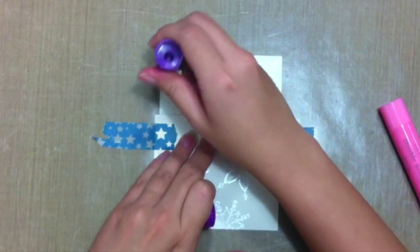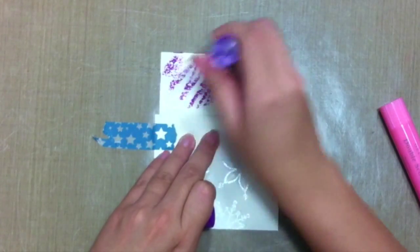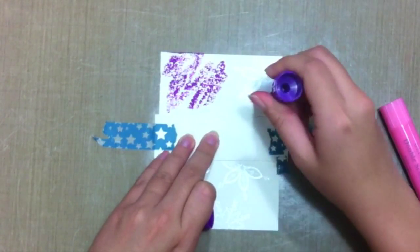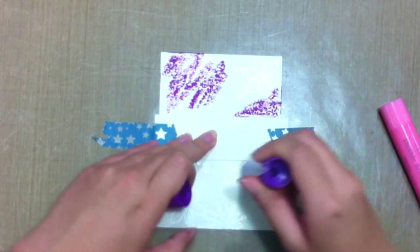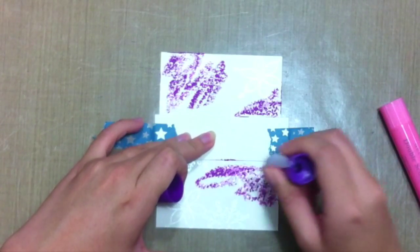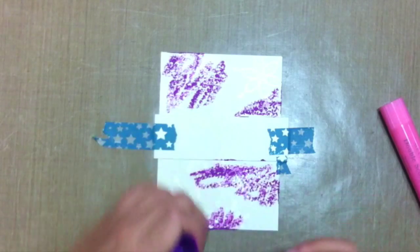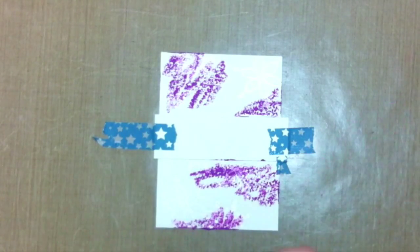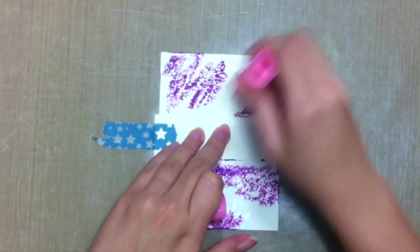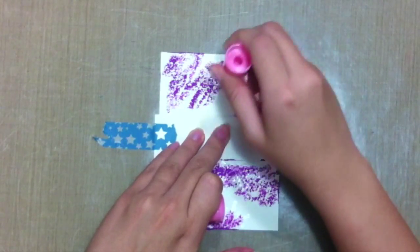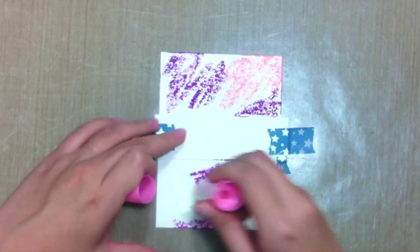So let's just start off by placing some random, coloring some random spots around. It doesn't look like anything pretty right now, but you'll see afterwards.